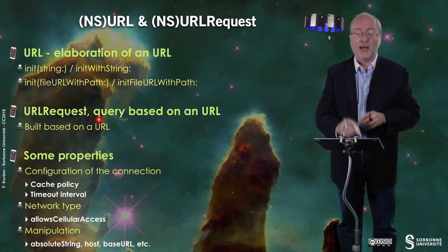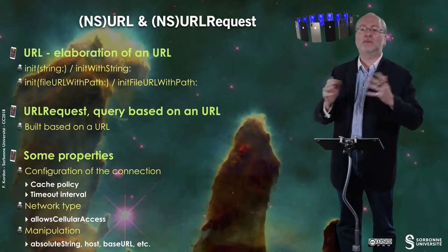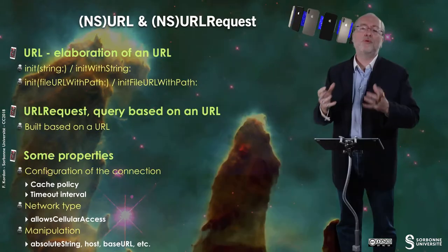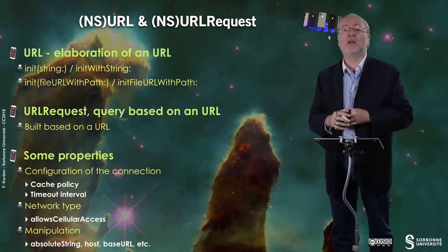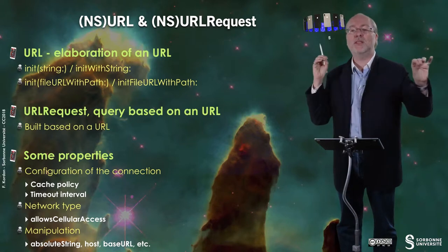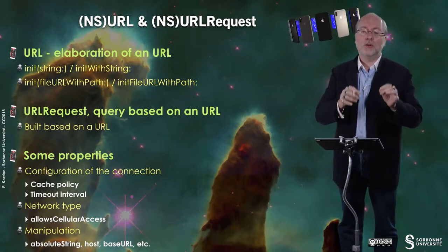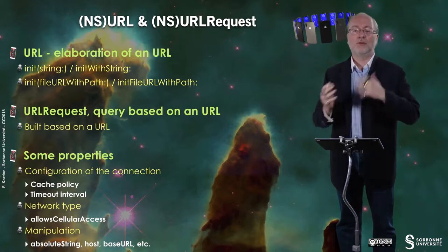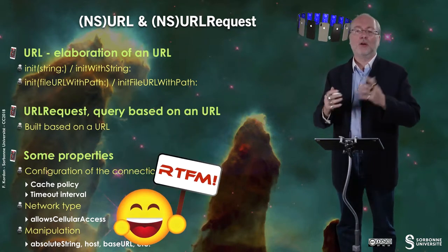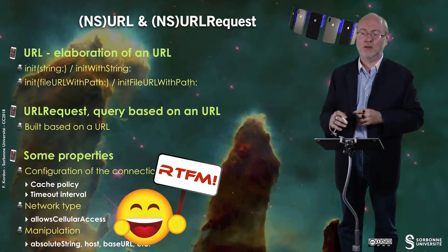Then you build a URLRequest based on an existing URL, and there are some interesting properties on this request. You can set up a cache policy, a timeout interval, and also decide whether you allow cellular access — though with 4G and soon 5G, that's less necessary. You can also manipulate URL elements: get the absolute string, just the host, just the base URL, and so on.